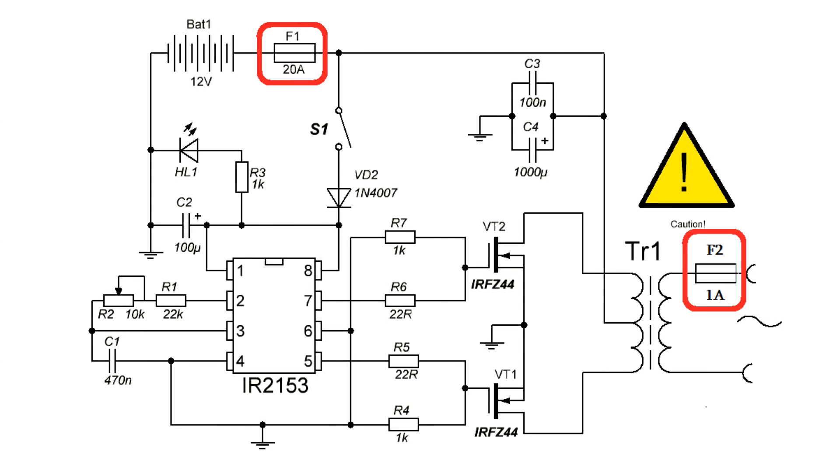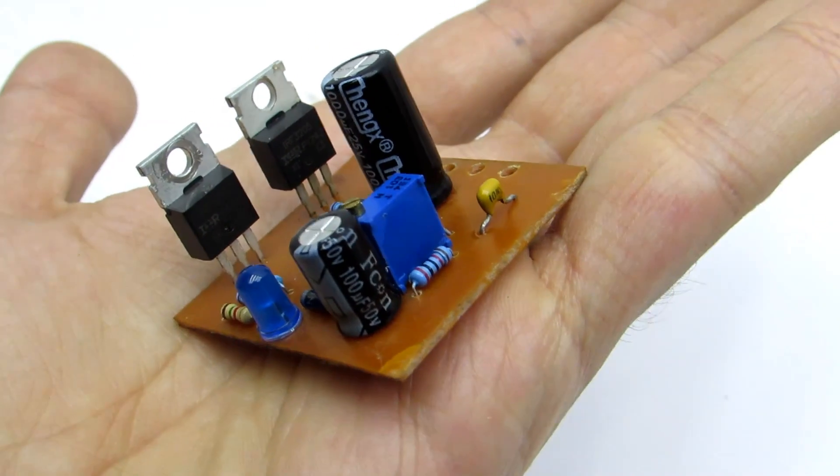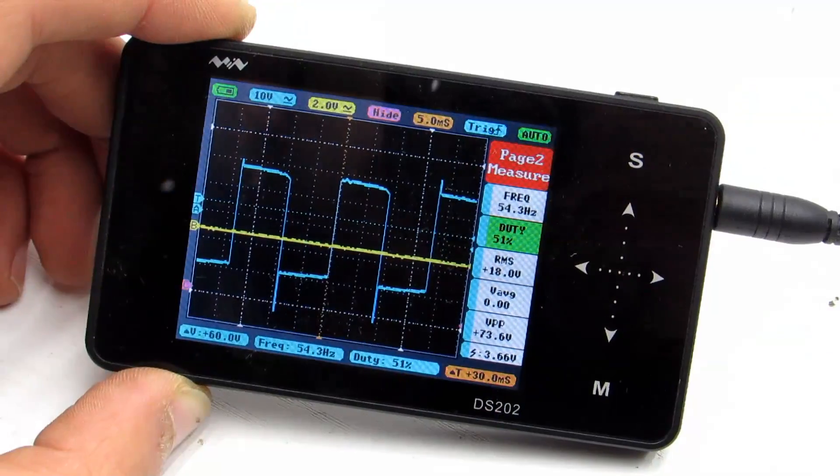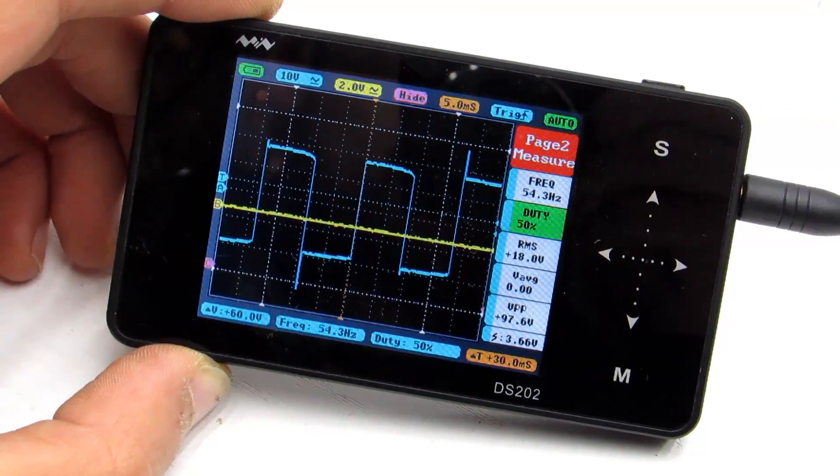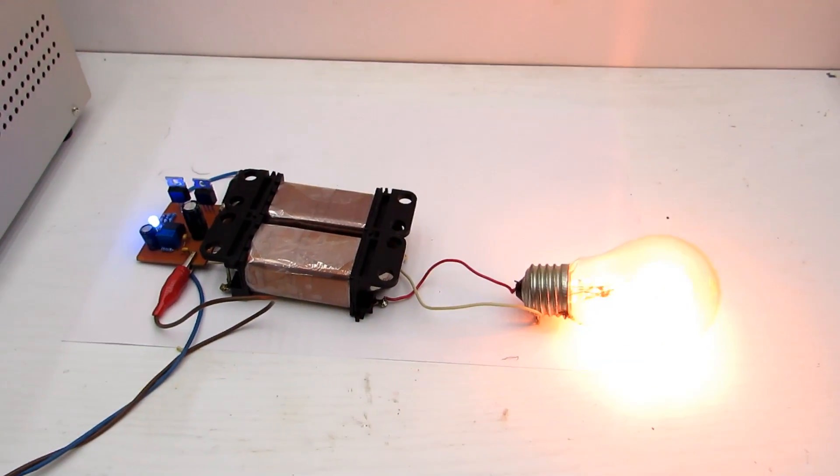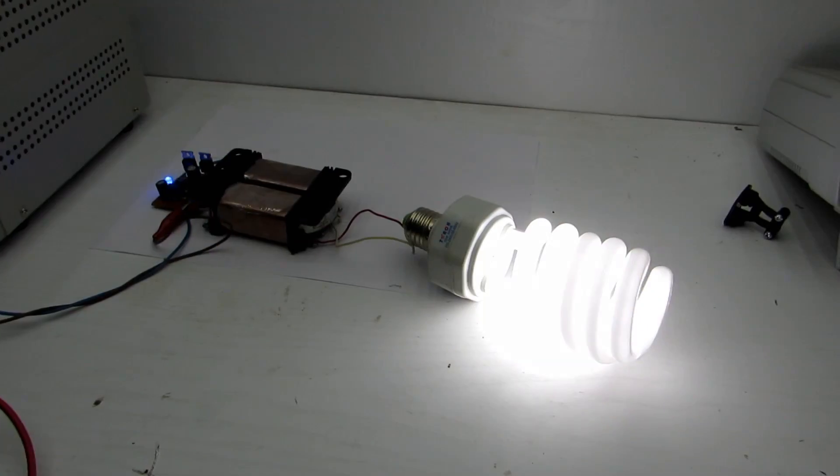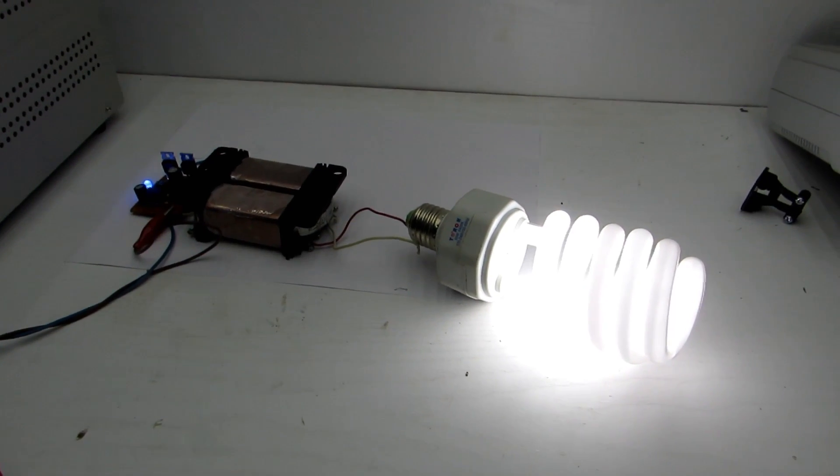Be sure to install a fuse F1 on the input. Another fuse F2 of 1 to 1.5 amperes is advised to put at the output. I do not advise to use this scheme for serious purposes. In addition to the lack of stabilization, the output pulse shape is not rectangular. You can connect any passive load: light bulbs, soldering irons, etc.